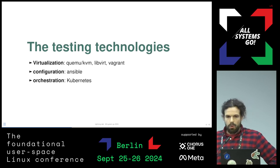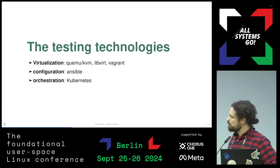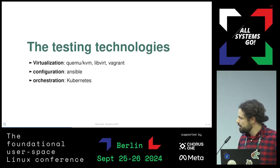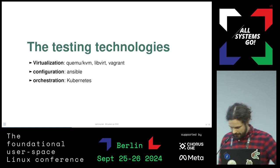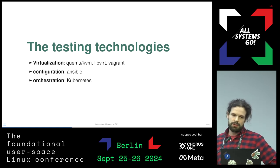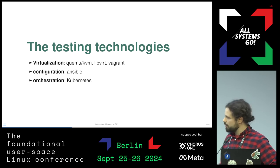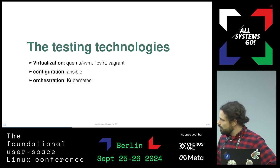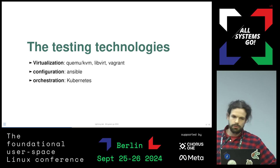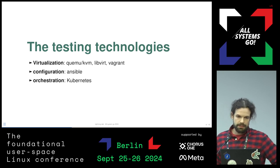What we developed on is the classical virtualization stack. We have KVM, LibVirt, and Vagrant to perform the first layer provisioning of the virtualization infrastructure. We use a lot of Ansible in order to configure it, and we orchestrate the server part of Slurm with Kubernetes.